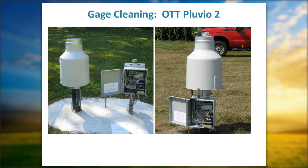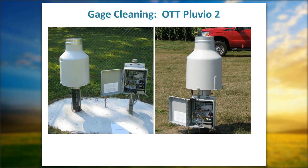The OTT Pluvio 2 gauge — sometimes called the fat boy — has an RMM data logger that's either mounted underneath or on a side pole. When downloading your data every Tuesday, open it, attach your flash drive, make sure wires are connected, the red flashing light is on, and do a battery check. Make sure there are no spiders, cobwebs, or rodents that have chewed wires. During winter or heavy precipitation periods, try to empty it on a routine basis.